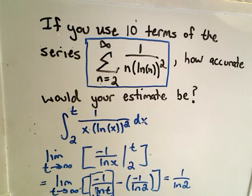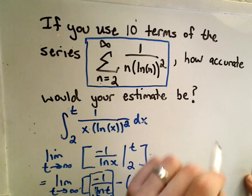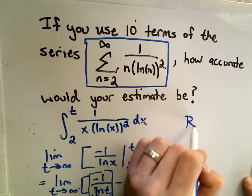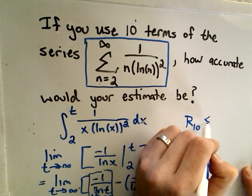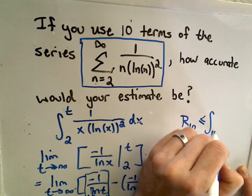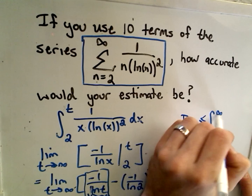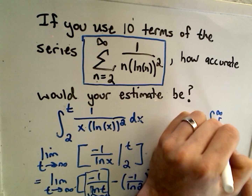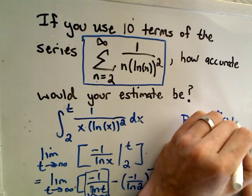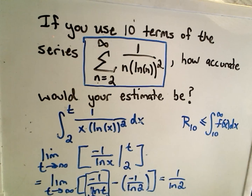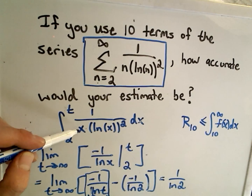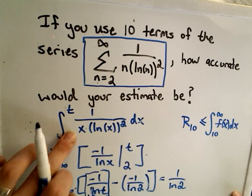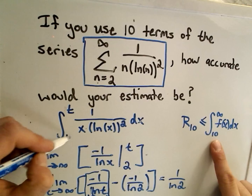Now, if we use the first ten terms, we use the right-hand side of the inequality. The remainder will be less than or equal to the integral from 10 to infinity of the function — 1 over x times the natural log of x squared — with the limit as t goes to infinity. The only thing that changes is our lower limit of integration, which becomes 10.